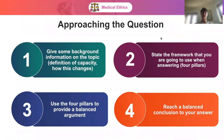When approaching the question, give some background information on the topic — for example, a definition of capacity and how this changes, bringing in Gillick Competency or the Mental Capacity Act of 2005. Then state the frameworks you're going to use, such as the four pillars. Use the four pillars to provide a balanced argument — make your argument and supplement it with the pillars. For example: 'I believe that children should be able to consent to their own procedures because this empowers and respects the child — and this complies with autonomy, one of the four pillars of medical ethics.' Then reach a balanced conclusion.